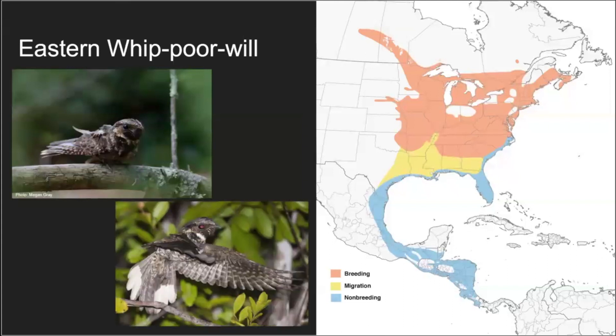One of the species that utilizes early successional forest is the Eastern Whippoorwill. You can see in its full range map that it breeds extensively throughout the eastern portion of the United States. It winters along the southern coast, but primarily in southern Mexico and into Central America.